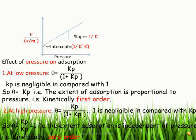This slide shows the graph of P/(X/M) versus pressure P. The intercept is 1/(KK') and the slope is 1/K'. Now we consider two cases regarding the effect of pressure on adsorption. At low pressure, θ = KP/(1 + KP). Since pressure is low, KP is negligible compared to 1 in the denominator, so θ ≈ KP.